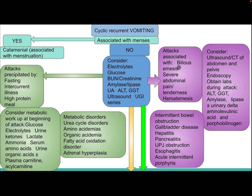If the attack is associated with bilious emesis, severe abdominal pain, tenderness, or hematemesis, consider ultrasound and CT of the abdomen and pelvis, and endoscopy. Obtain labs during the attack including ALT, GGT, amylase, lipase, urine delta-aminolevulinic acid, and porphobilinogen.